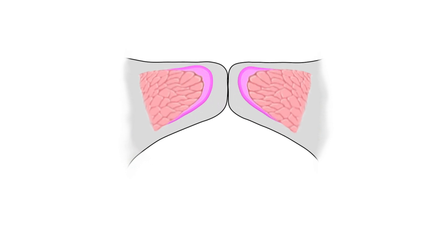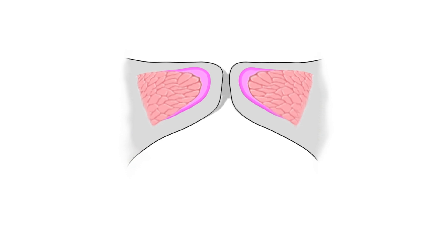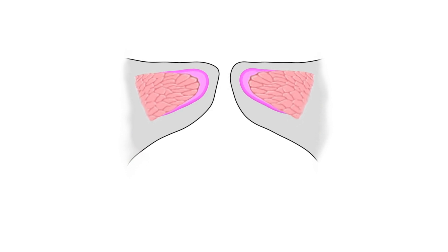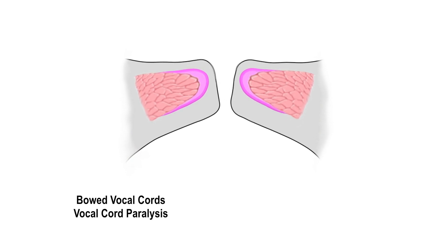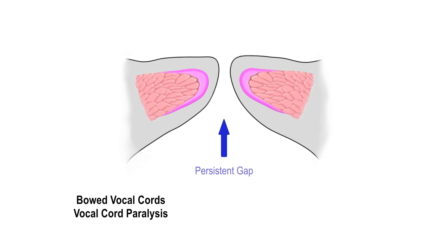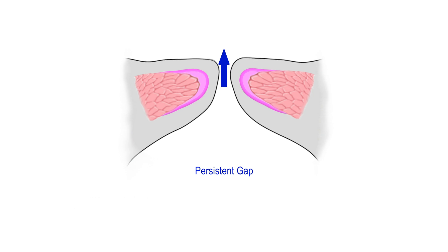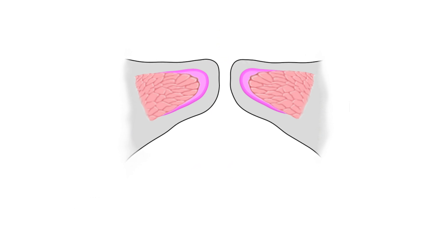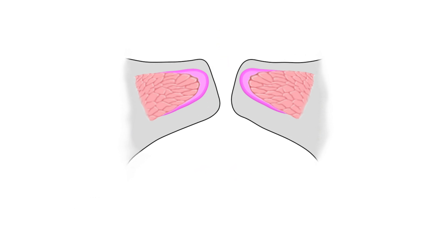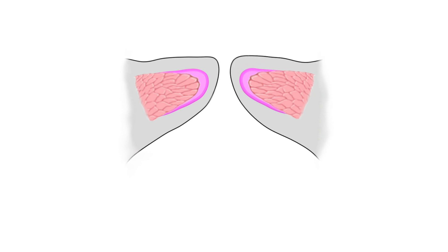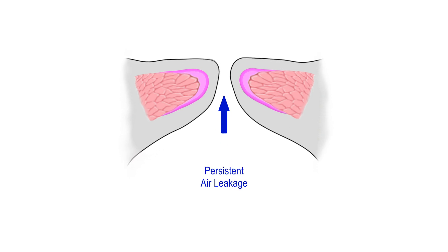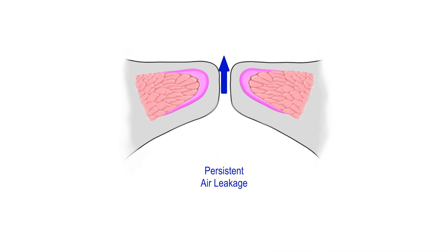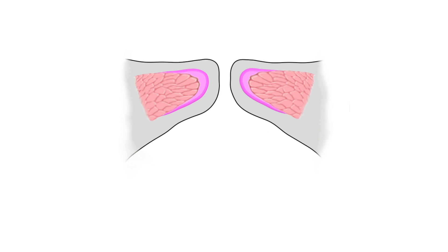In the opposite extreme, a weak and breathy voice can occur when the vocal folds do not come together, leaving a persistent gap. This may occur with a vocal cord paralysis or when the vocal fold muscles become very weak, leading to vocal fold bowing. During phonation, air leaks out between the vocal folds, resulting in a breathy and weak-sounding voice.